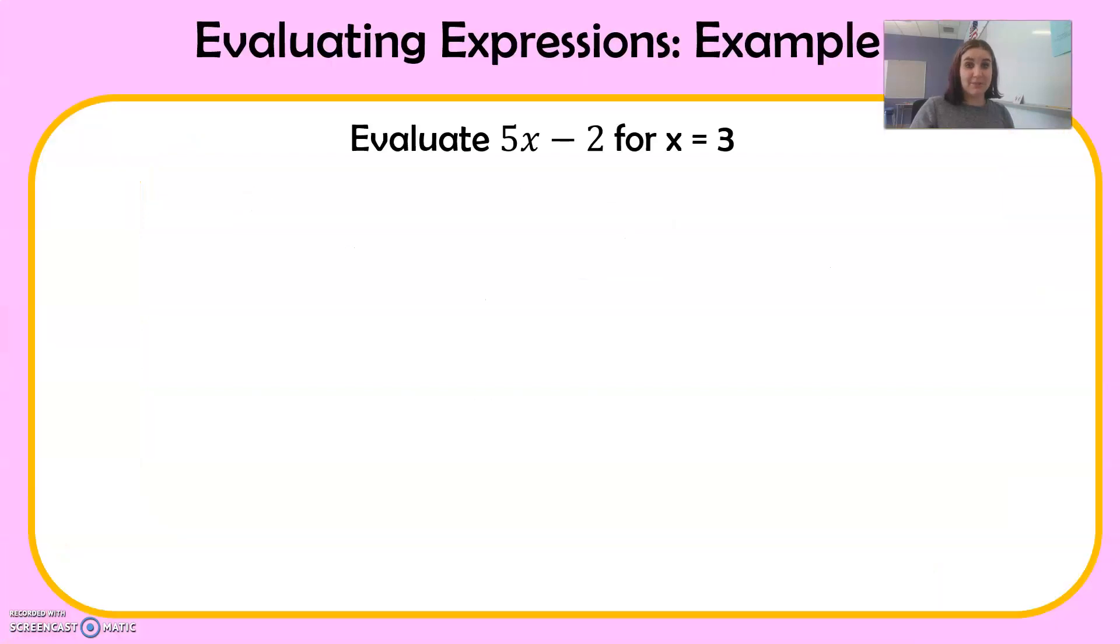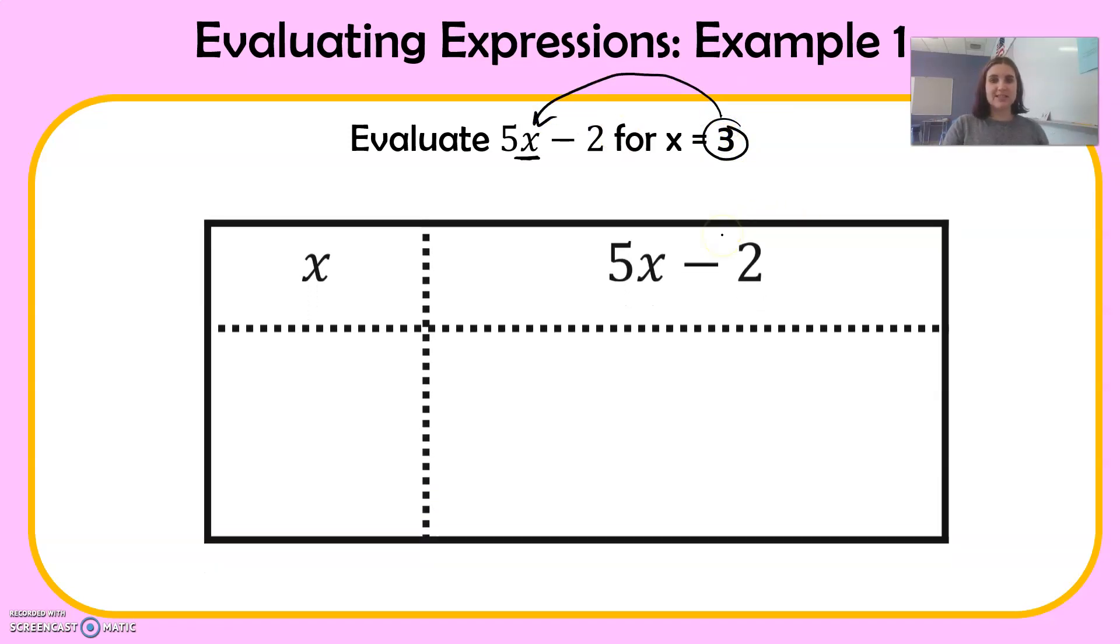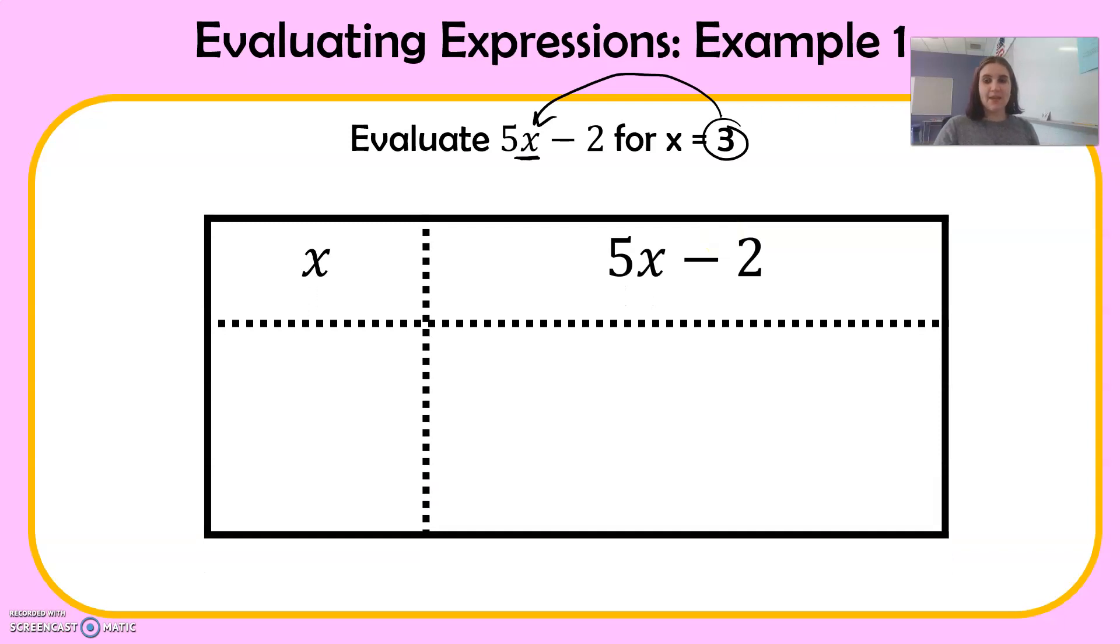Let's do the first example. Example number one. Evaluate 5x minus 2 for x equals 3. So we're going to take that x that's in the expression and substitute it with what we're given for x. So x is 3. We're going to substitute it in right here. We're going to use this little table to help us out. So x is 3.